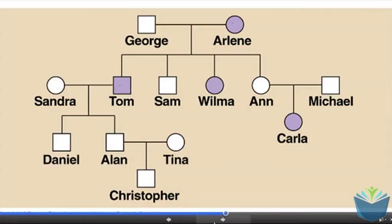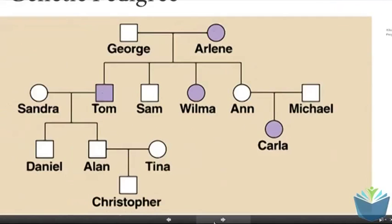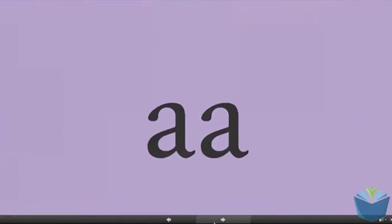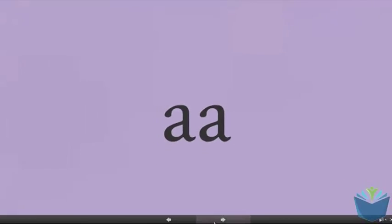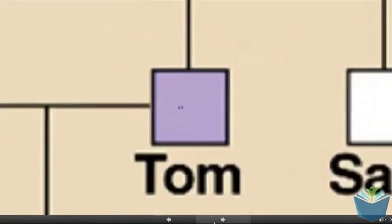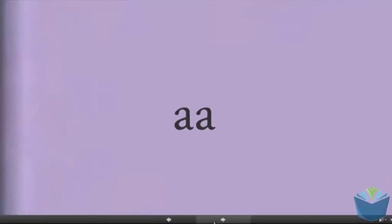If we use this example with albinism and we refer to people in purple as sufferers — if you're a sufferer and you've got albinism, you therefore need both recessive alleles in order to have it. An example of that would be Arlene, who has the genotype small a, small a, and also Tom, who has the genotype small a, small a.